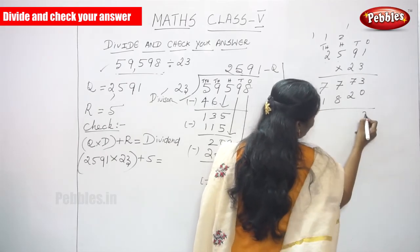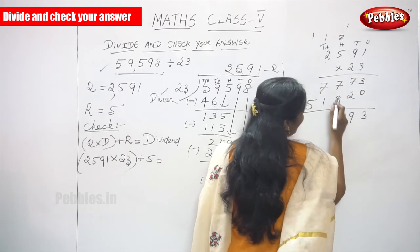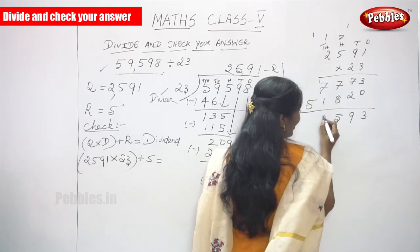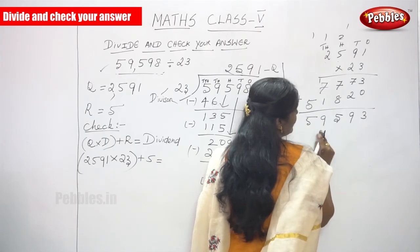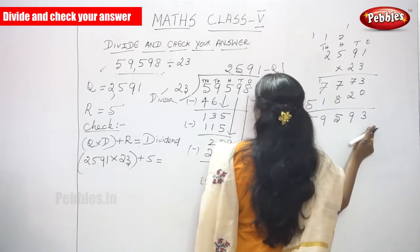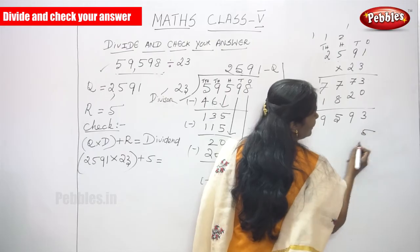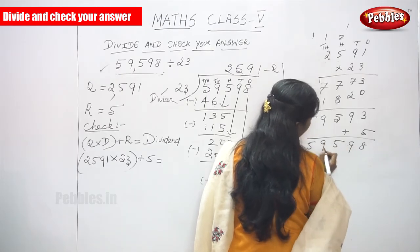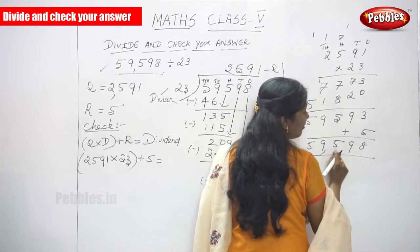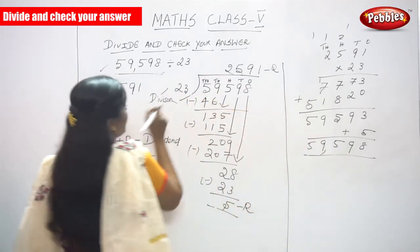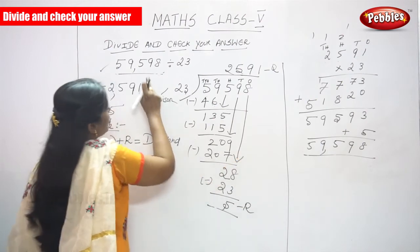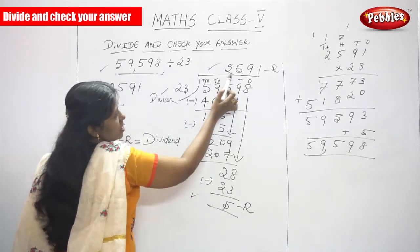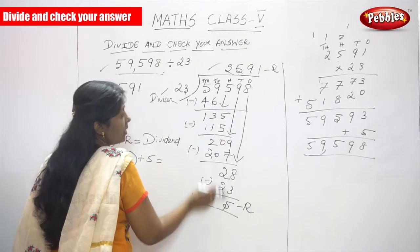Add both numbers: 3 plus 0 is 3; 7 plus 2 is 9; 8 plus 7 is 15 — write 5, carry 1; 7 plus 1 plus 1 is 9; 8 plus 1 is 9 — then 5. The answer is 59,593. Then add the remainder of 5: 3 plus 5 is 8 — giving 59,598. So the quotient of 2,591 and the remainder of 5 are both correct, because you get back the same dividend 59,598.